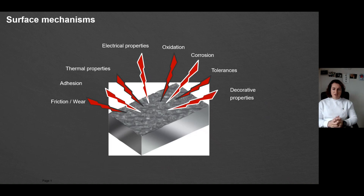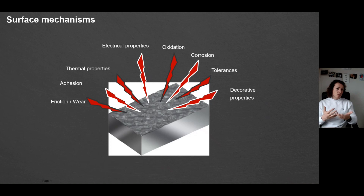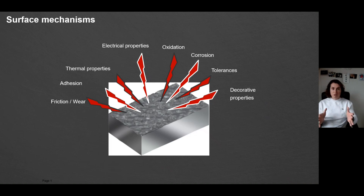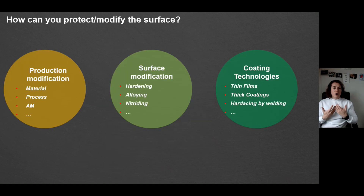Last but not least, there are decorative properties. If you think about luxury, we commonly have jewelry with certain coating on top — gold plating or other finishes — which still gives a fancy color but can help you reduce a lot of costs compared to producing the part from the whole material. So, to answer the question of how you can change, protect, and modify your surface, there are three main ways — there are definitely more technologies, but this is just to give you an overview and set some directions.